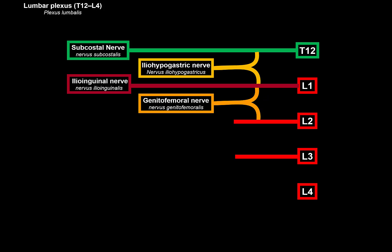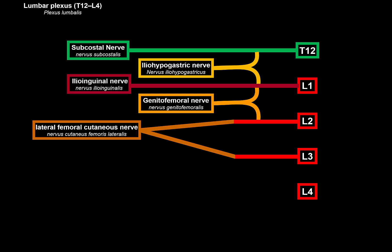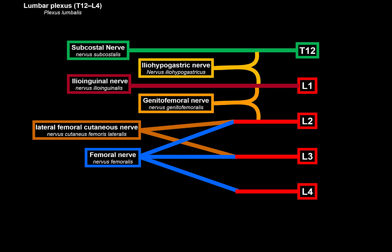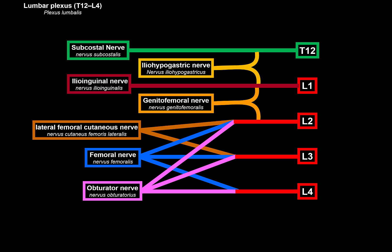L1 and L2 both give off branches that together form the genitofemoral nerve. L2 and L3 join to form the lateral femoral cutaneous nerve. L2, L3, and L4 go together to form the femoral nerve. L4 also joins L2 and L3 to form the obturator nerve. That is the basic outline of our lumbar plexus scheme.